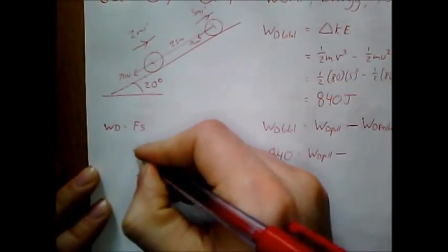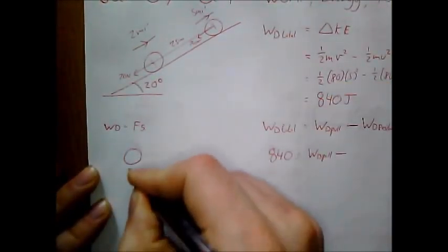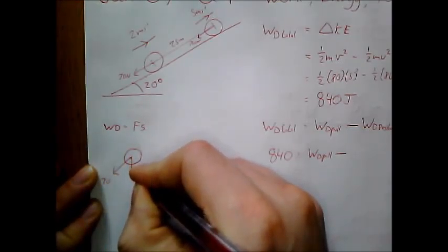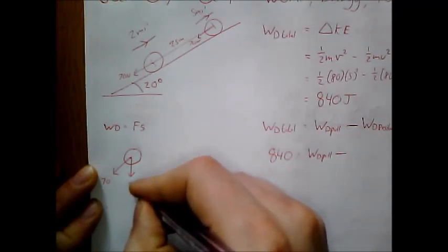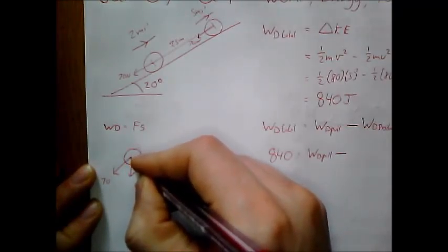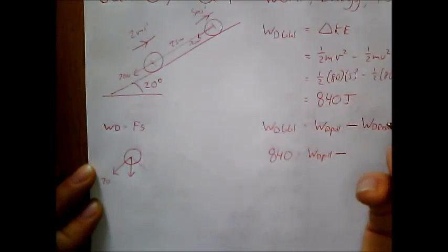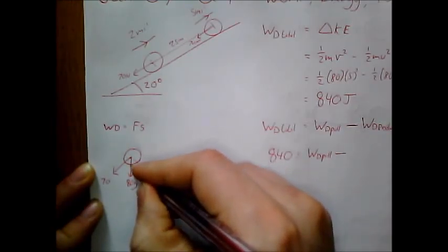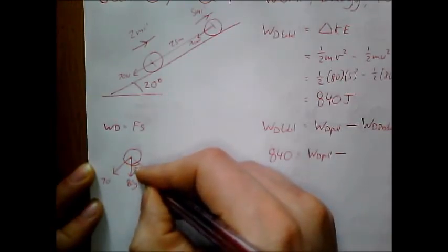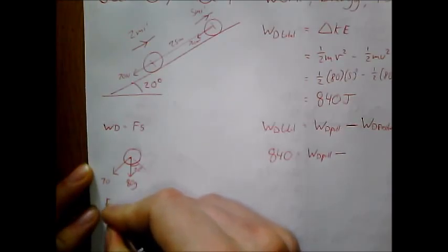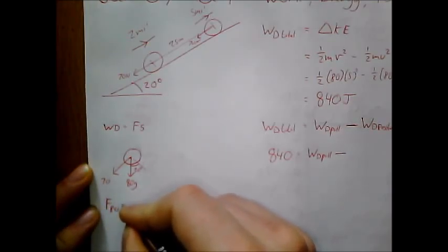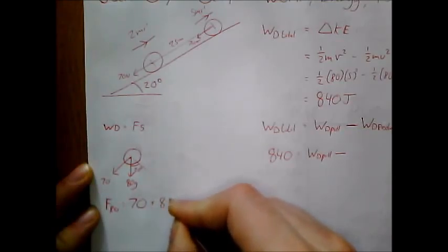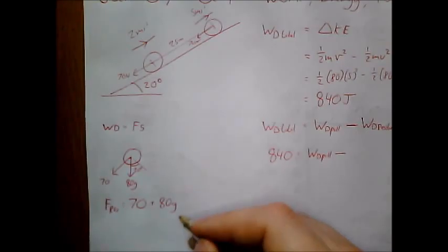So, let's do a quick force diagram here. So there's 70 newtons here. There's a force downwards of... What's his mass? 80 kilograms, was it? So 80g. And that had an angle of 20 degrees. So, F resistance is equal to 70 plus 80g sine 20.